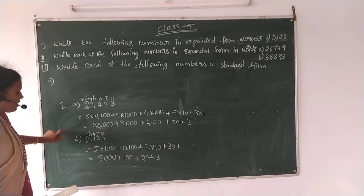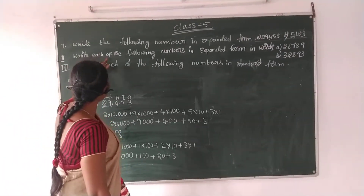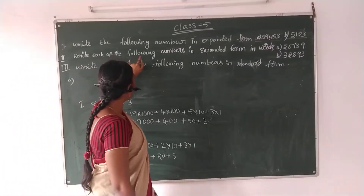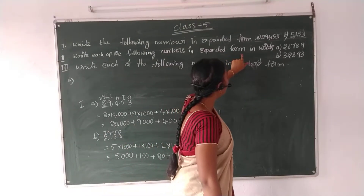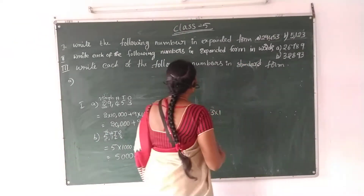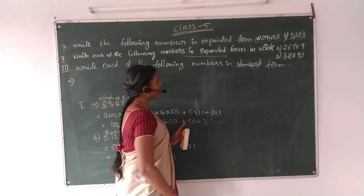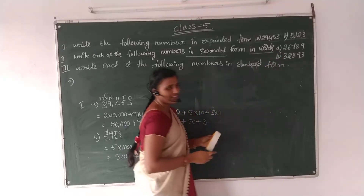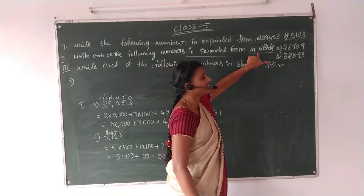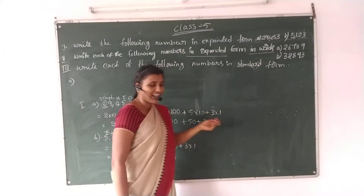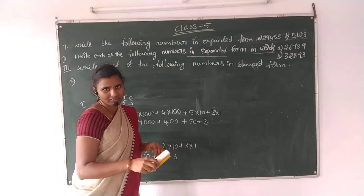Understood? These two are expanded forms. Now let's see: write each of the following numbers in expanded form and in words.